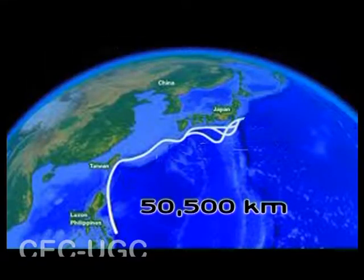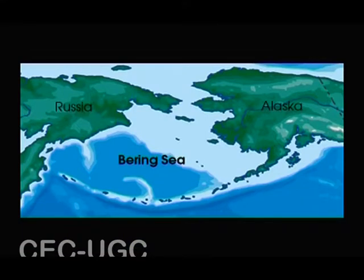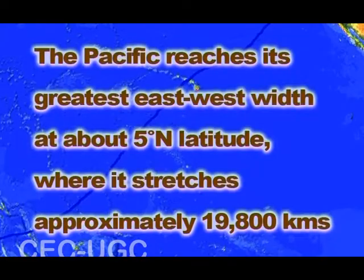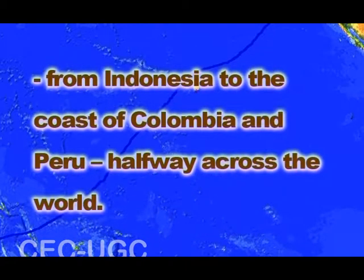Its maximum north-south length is about 14,500 kilometers and its greatest east-west width is about 17,700 kilometers between the Isthmus of Panama and the Malay Peninsula. It extends approximately 15,500 kilometers from the Bering Sea in the Arctic to the northern extent of the Southern Ocean at 60 degrees south. The Pacific reaches its greatest east-west width at about 5 degrees north latitude, stretching approximately 19,800 kilometers from Indonesia to the coast of Colombia and Peru.